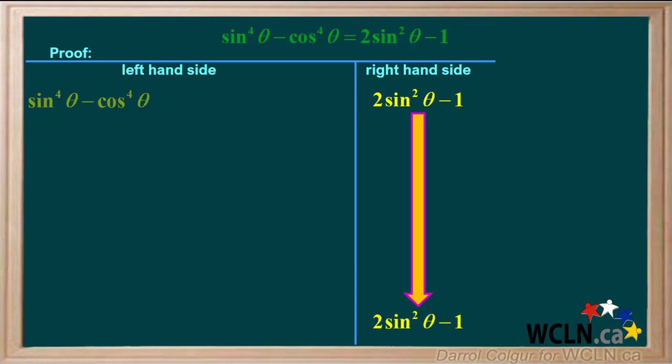We'll rewrite two sine squared theta minus one at the bottom of the right-hand side. And we'll work through the expression on the left, sine to the fourth theta minus cos to the fourth theta.